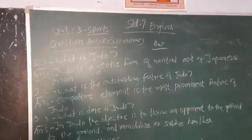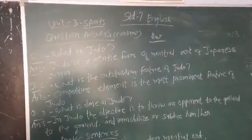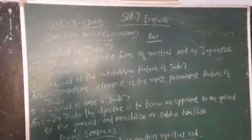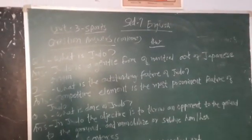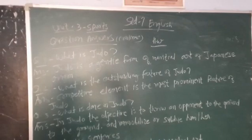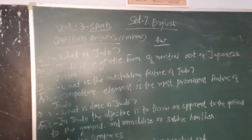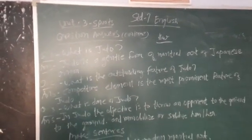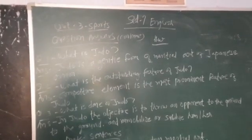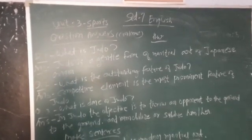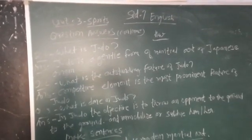What is done in Judo? In Judo, the objective is to throw an opponent to the ground and immobilize or subdue him.